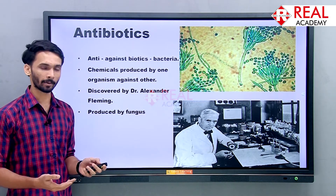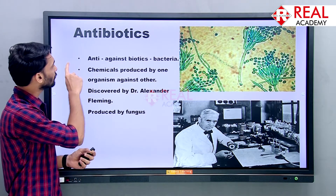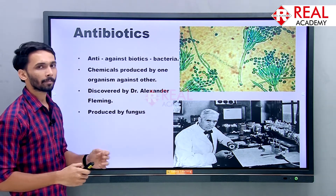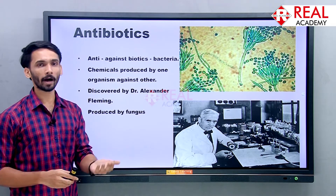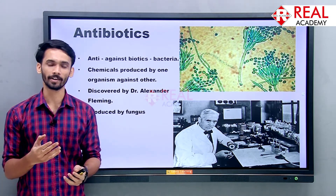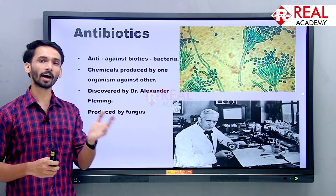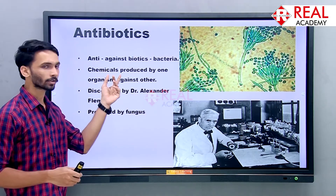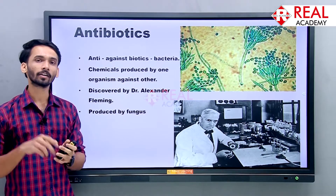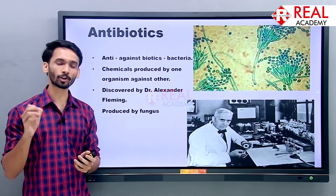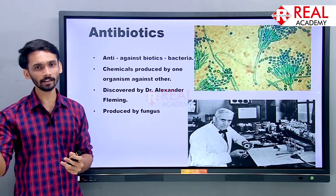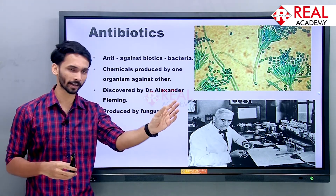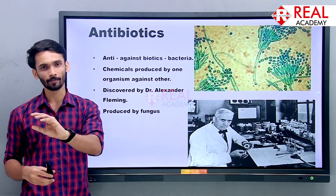What do we mean by antibiotics? If we split the word, that is 'anti' and 'biotics' — anti means against, while biotics means living organisms. A chemical which is against any living organism will be called an antibiotic. And those chemicals are not the original ones present in nature, but these chemicals are actually made by one organism against another.